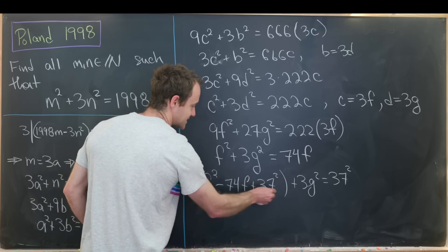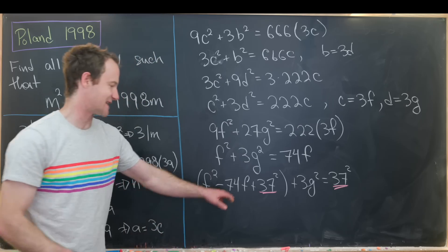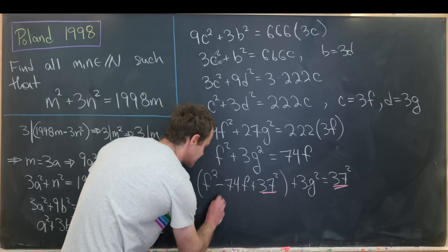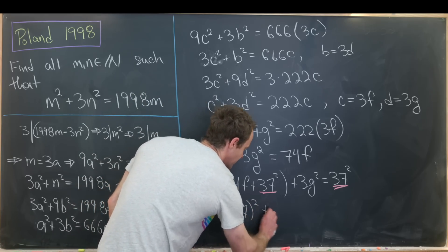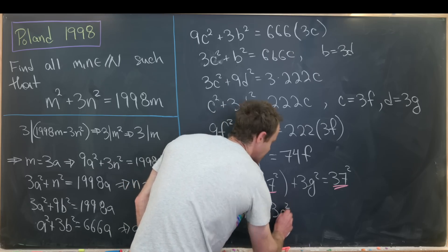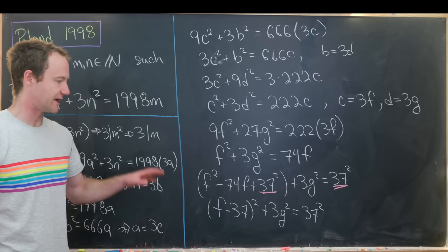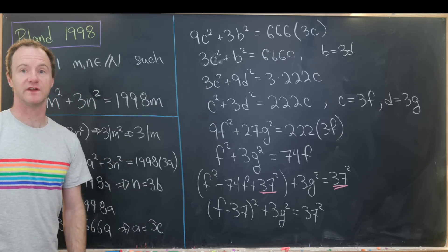I needed to add this 37 squared to both sides of the equation because that's half of 74 and then squared. So that leaves us with f minus 37 squared plus 3g squared equals 37 squared. So let's maybe bring that to the top of the next board and we'll finish it off.